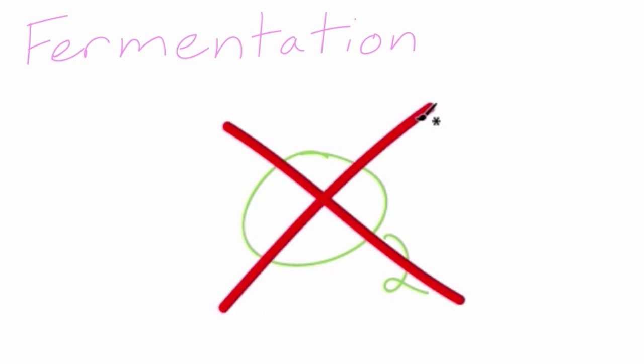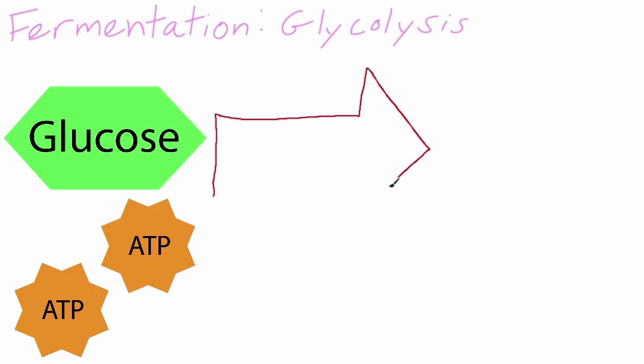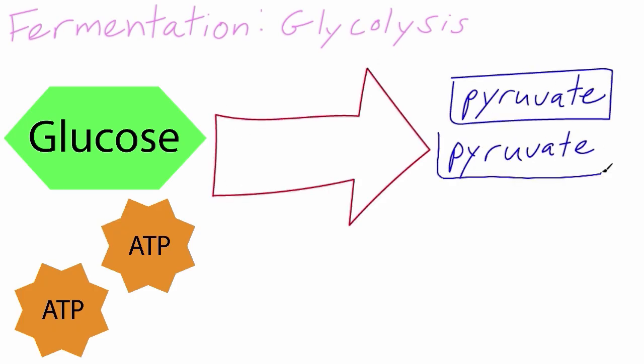Fermentation is an anaerobic process because oxygen is not required for it to occur. But fermentation is not the same as anaerobic respiration. The first step in fermentation is glycolysis. Just like in cellular respiration, the cell breaks down a molecule of glucose to form two ATP and two pyruvates.